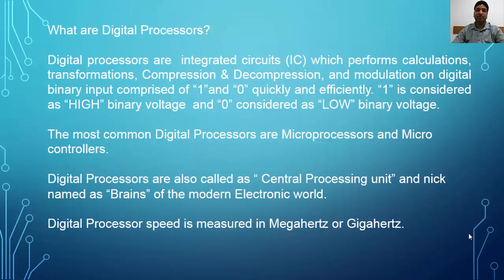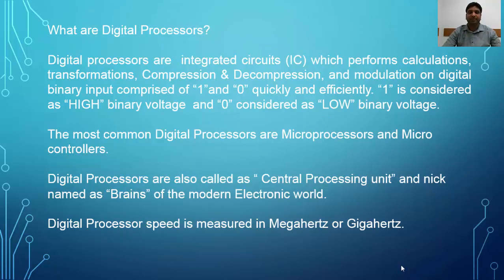Digital processor speed is measured in megahertz or gigahertz. For instance, if you have a processor running at one gigahertz, that one gigahertz processor can execute one million instructions per second, or one million cycles per second.